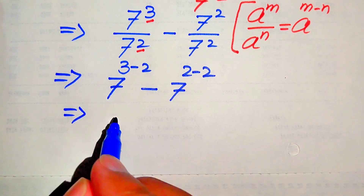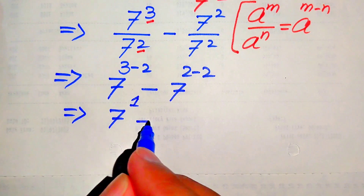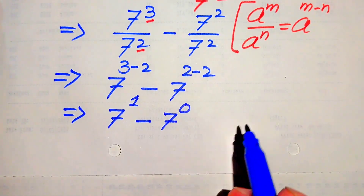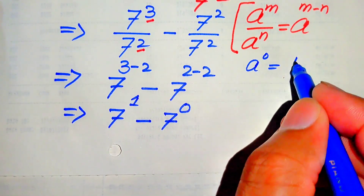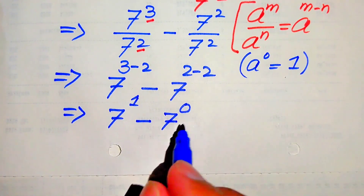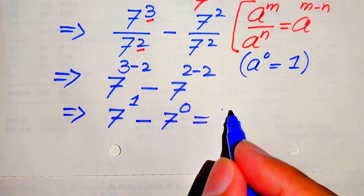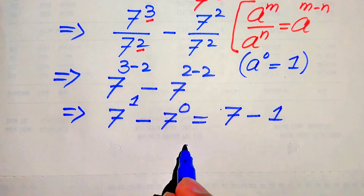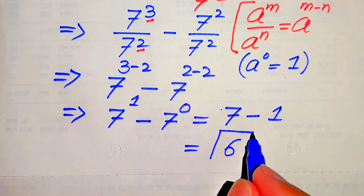We now have 7 to the power of 1 and 7 to the power of 0. Since any number with exponent 0 equals 1, 7 to the power of 0 equals 1, and 7 to the power of 1 equals 7. So we get 7 minus 1, which gives us 6 as the final answer.